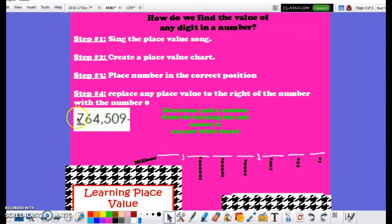I can answer what is the value of this seven in 764,509 by following steps three and steps four. Step three is placing this entire whole number in the correct place value slots. That means that only one digit can go into one place value position.